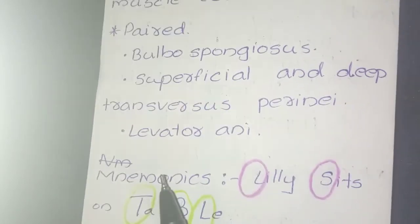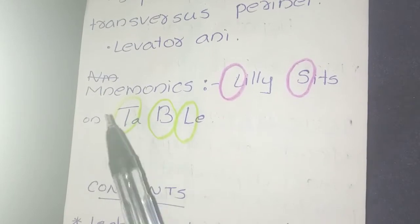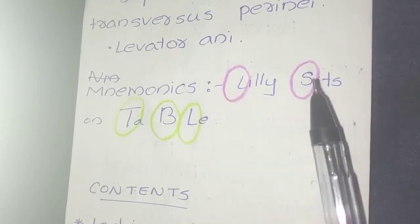To memorize this, the mnemonic will be 'the lily sits on table.' The L and S stand for the unpaired muscles, and T, B, L stand for the paired muscles.